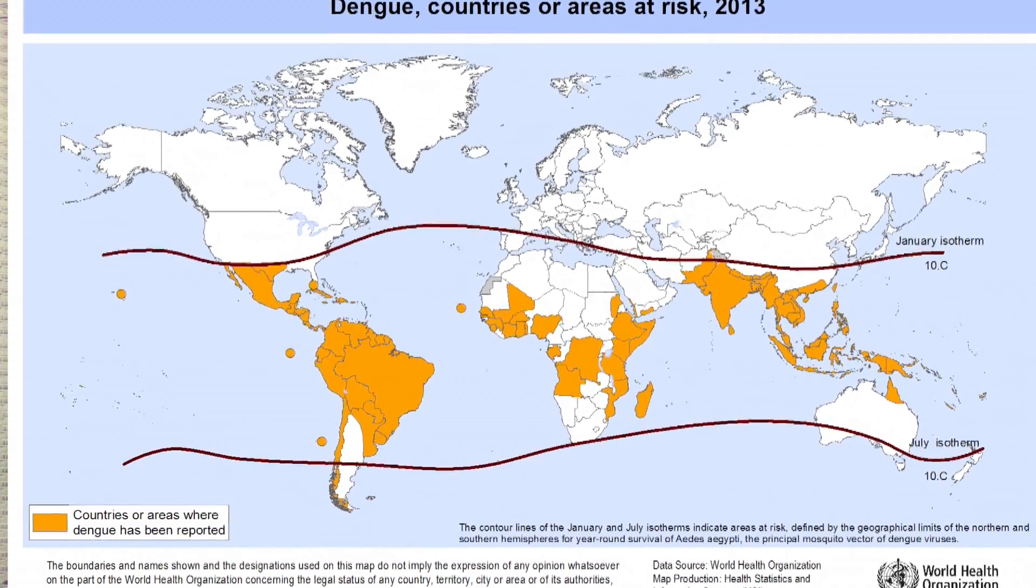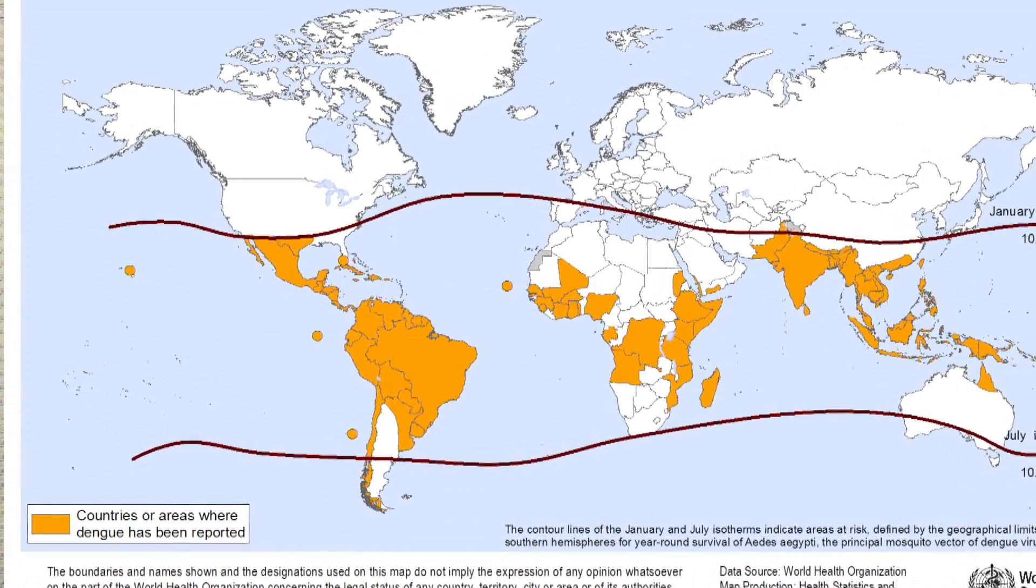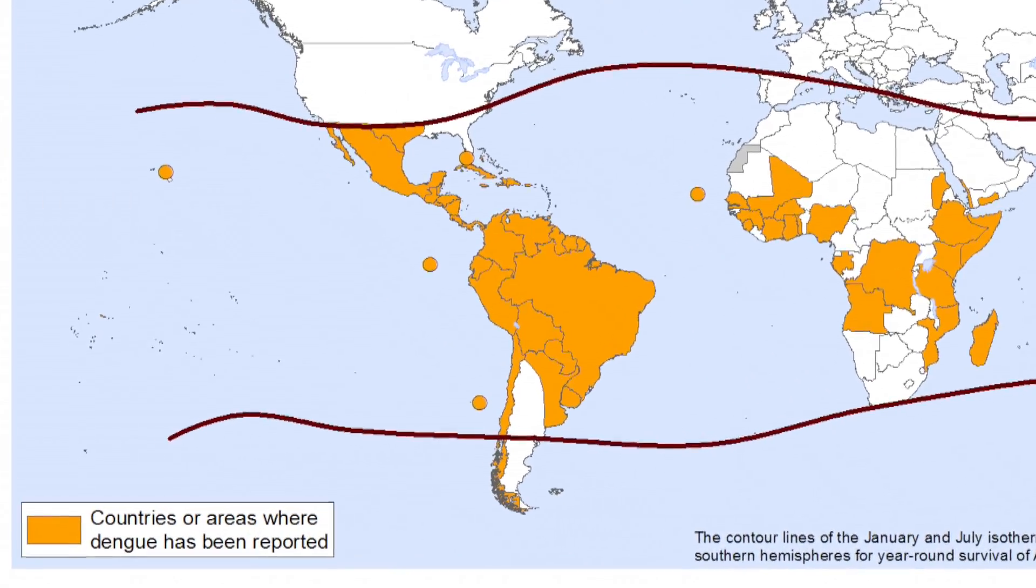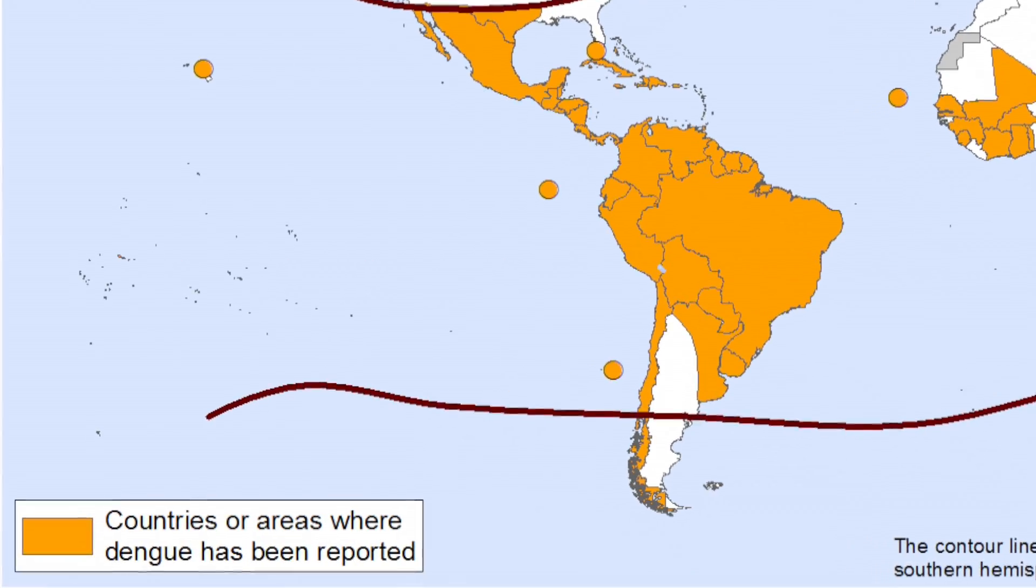They also looked at sera from people who had recovered from dengue and found a similar effect. Now, if this is confirmed in animal models and in people, it's very serious because dengue is very extensive, and many people in places that are getting infected with Zika also have been infected with dengue virus. So they're going to have antibodies to the virus, and this could make Zika virus disease more severe.